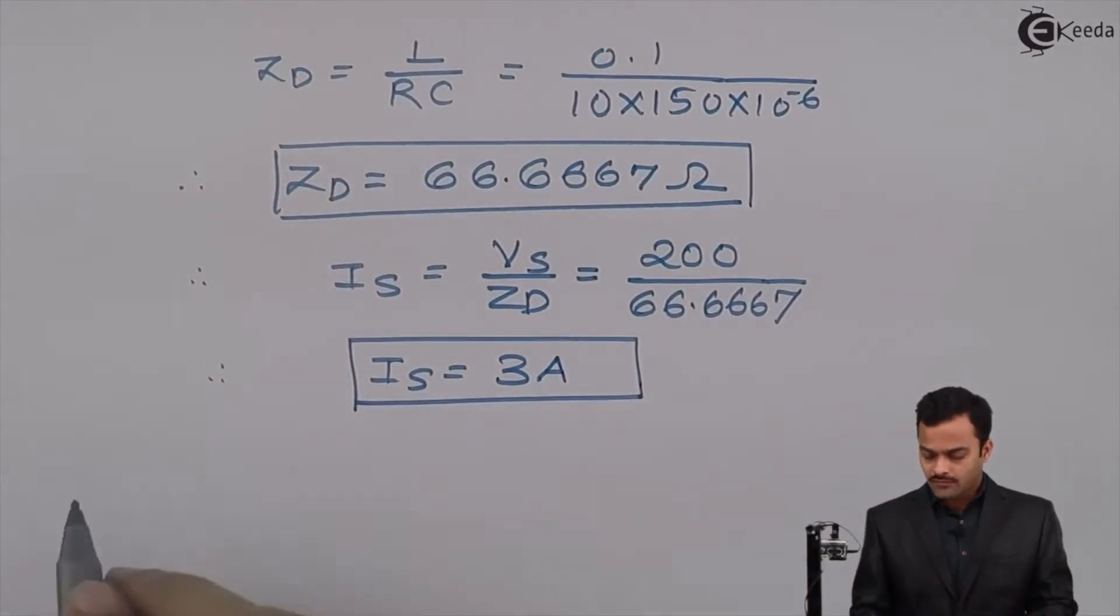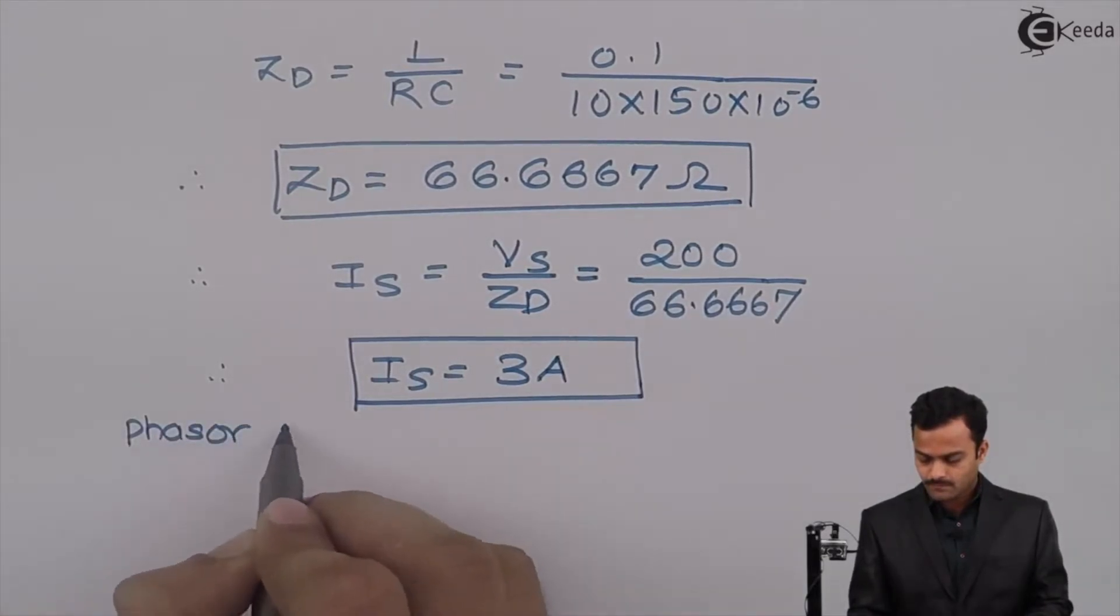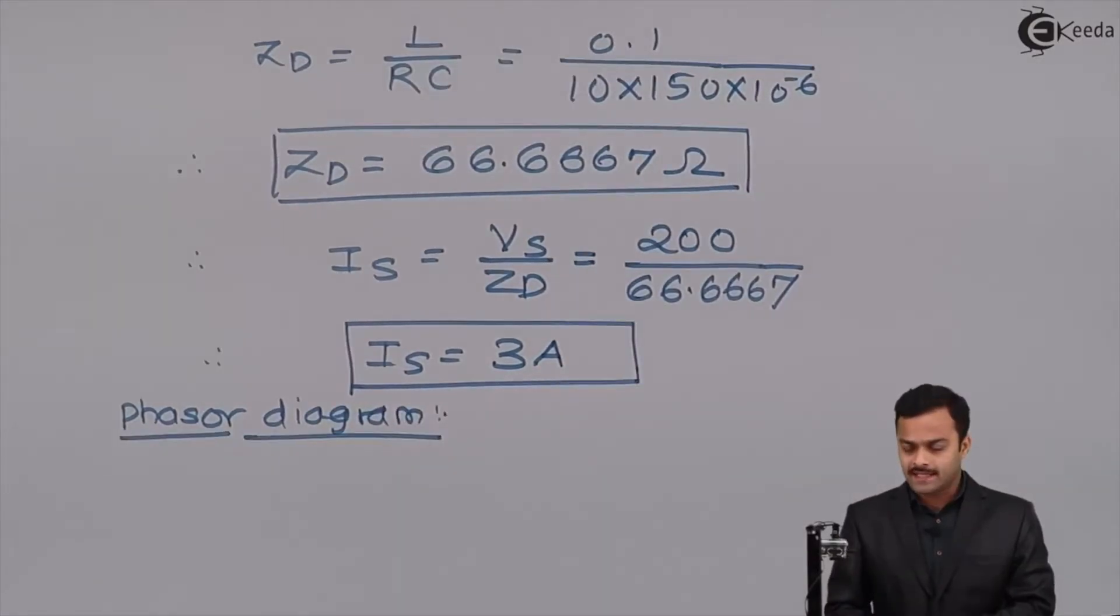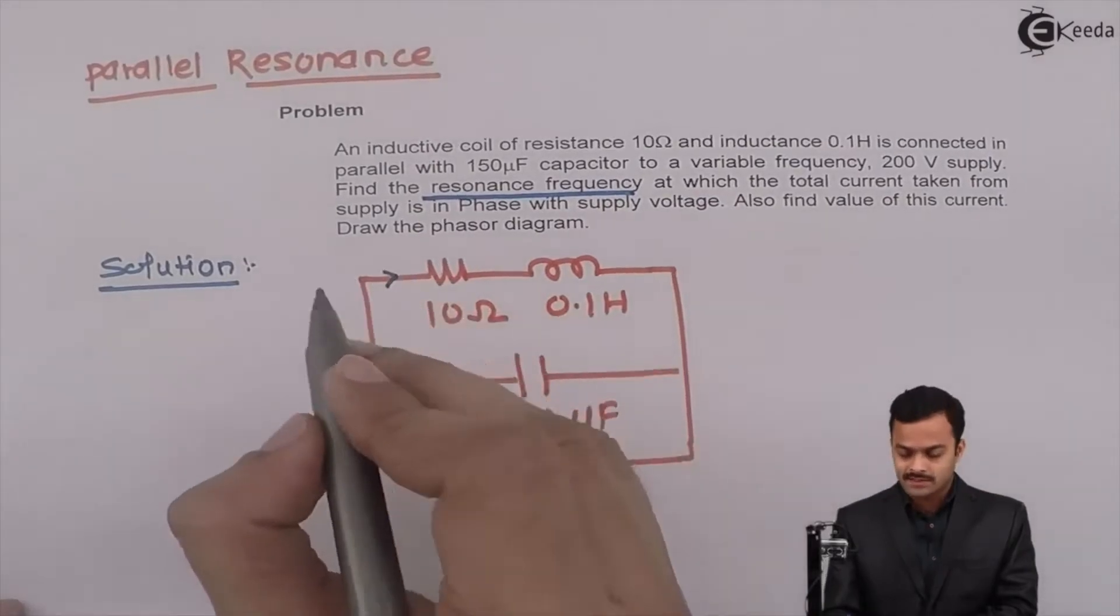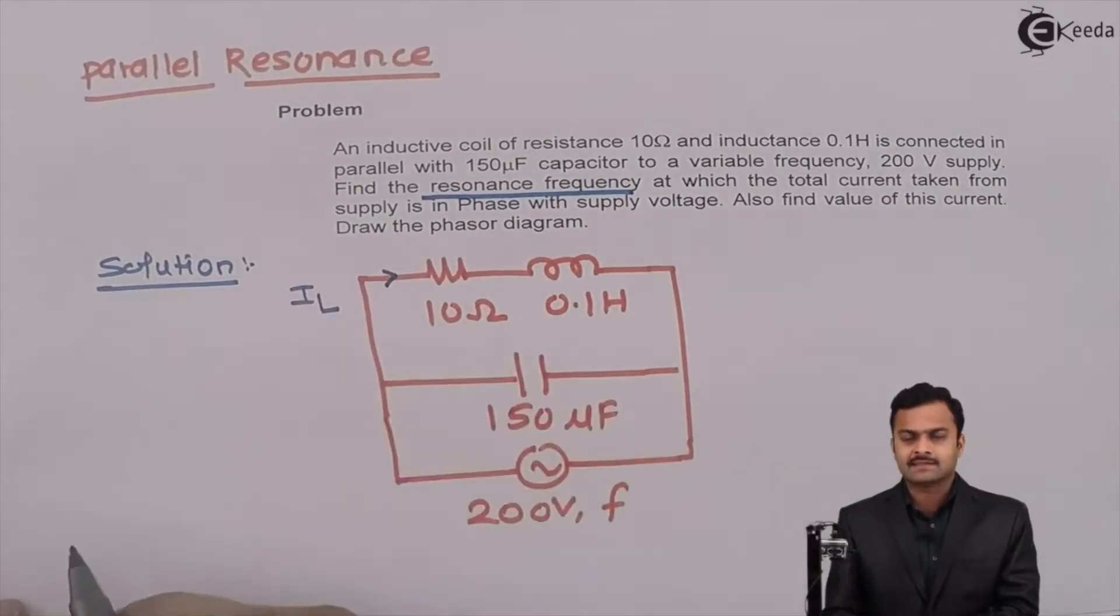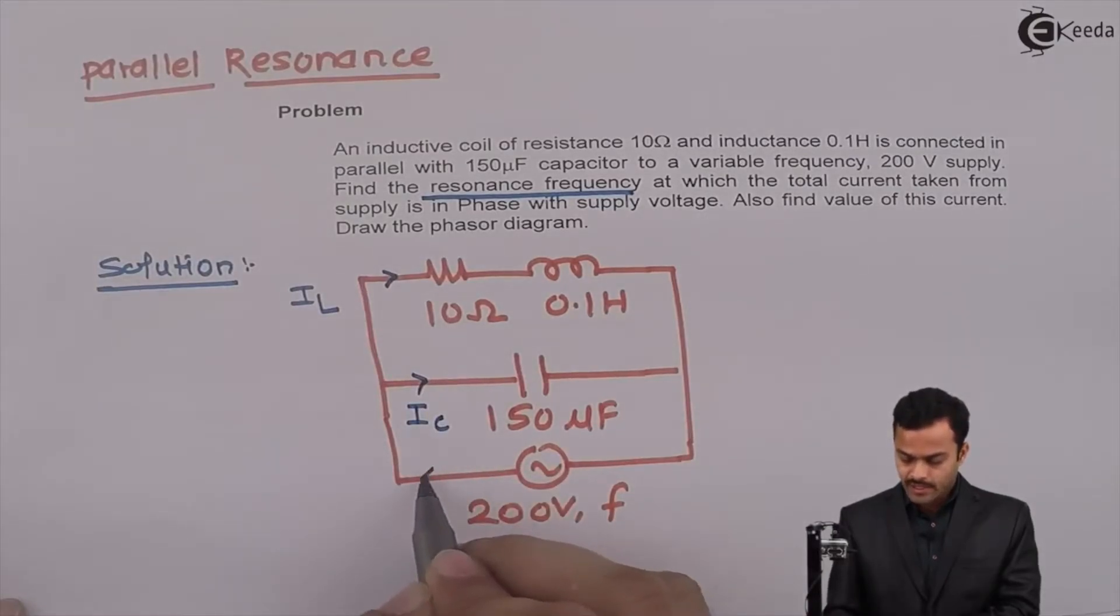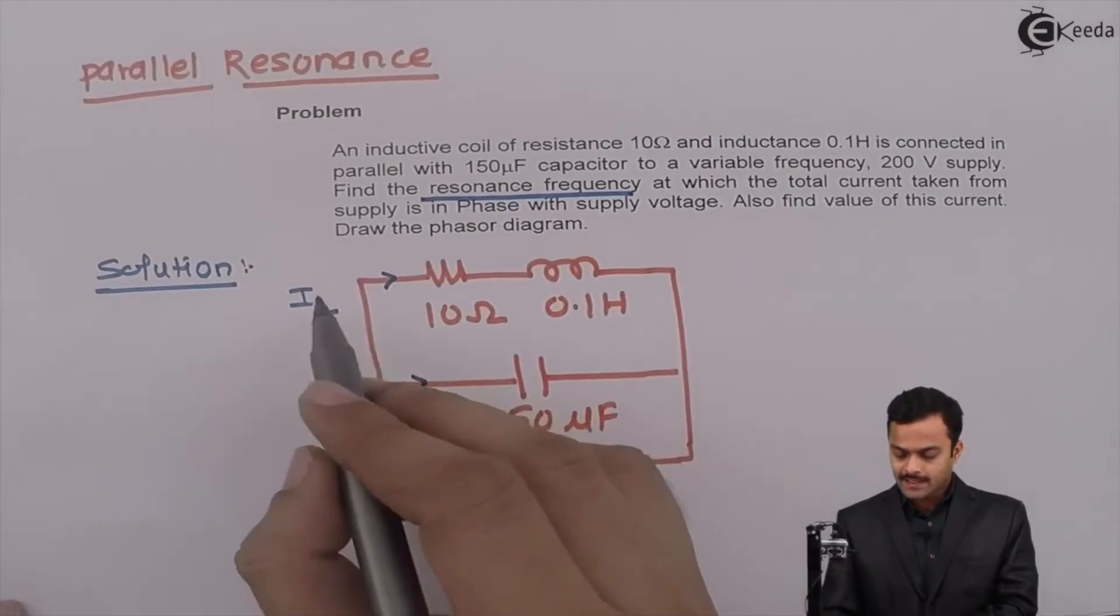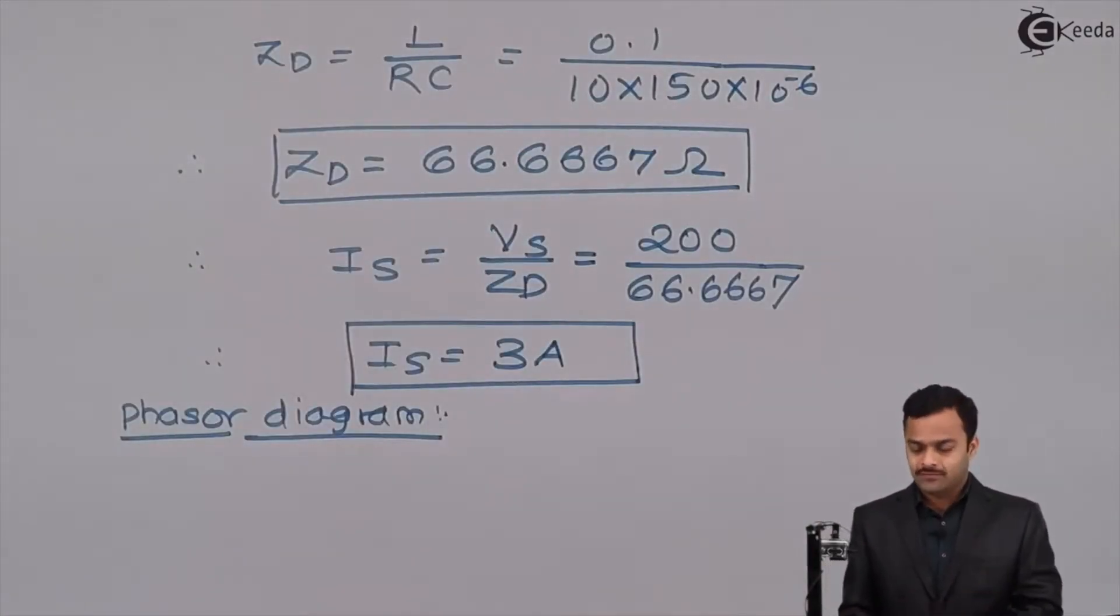And lastly we will draw a phasor diagram. So let's draw a phasor diagram. So for drawing a phasor diagram what I need: I need to know what is the current taken by this coil which I will represent as IL and current taken by this capacitor IC. This we have already calculated as Is. So for getting the current I should know impedances, so let's calculate ZL first.